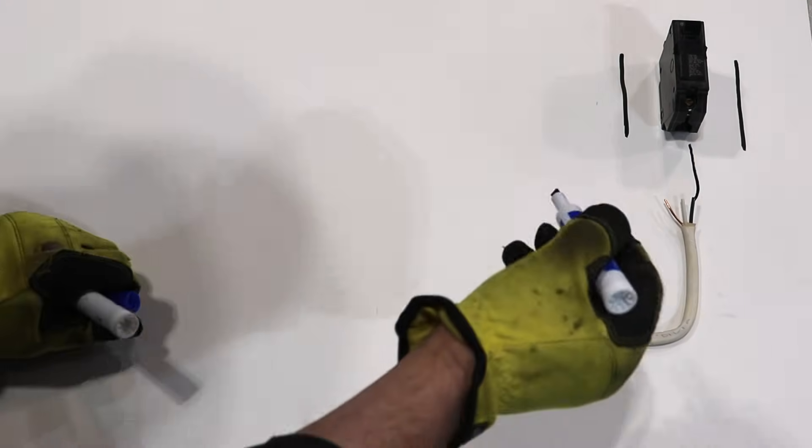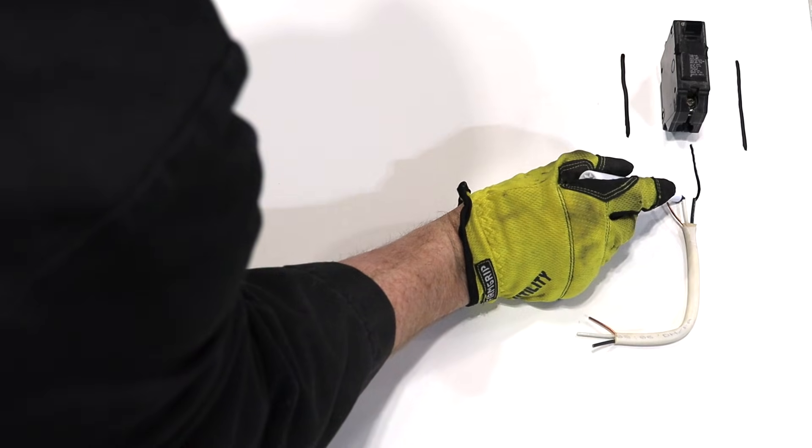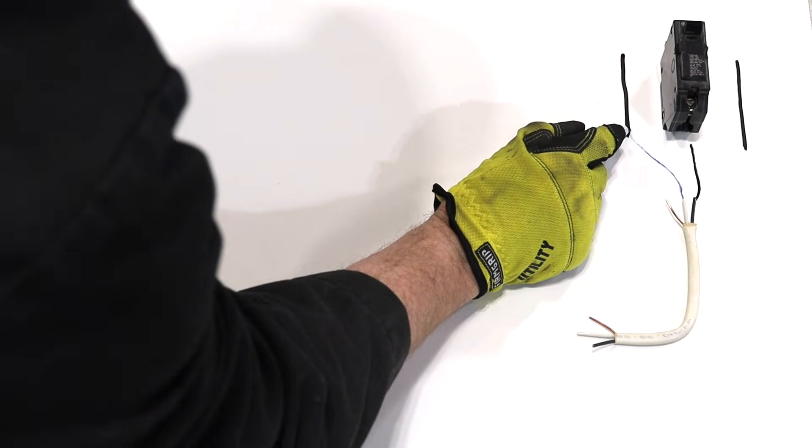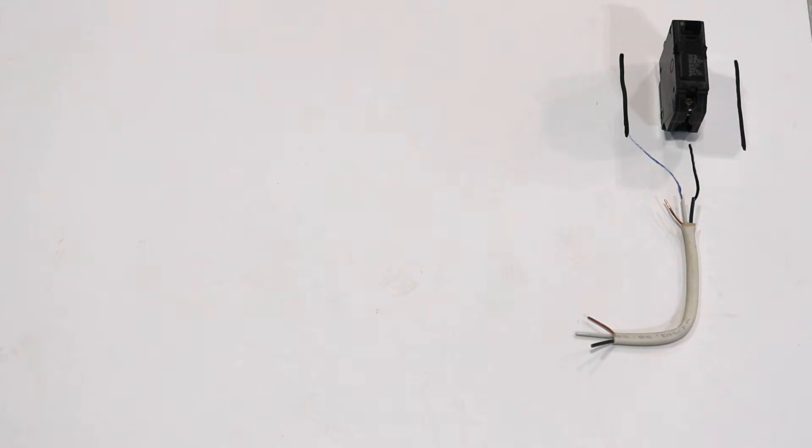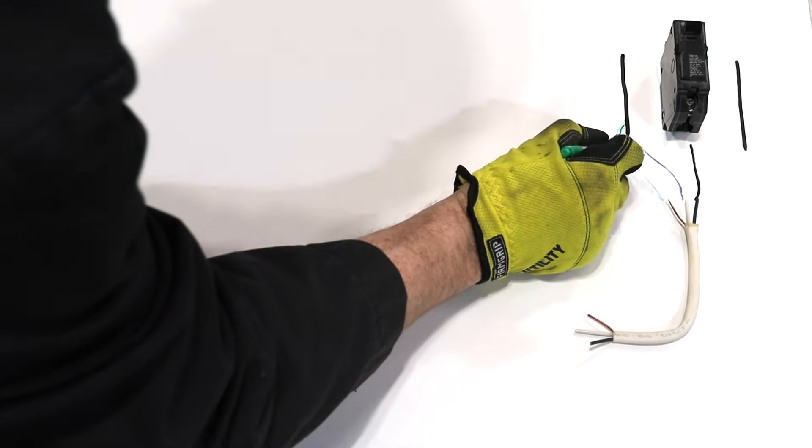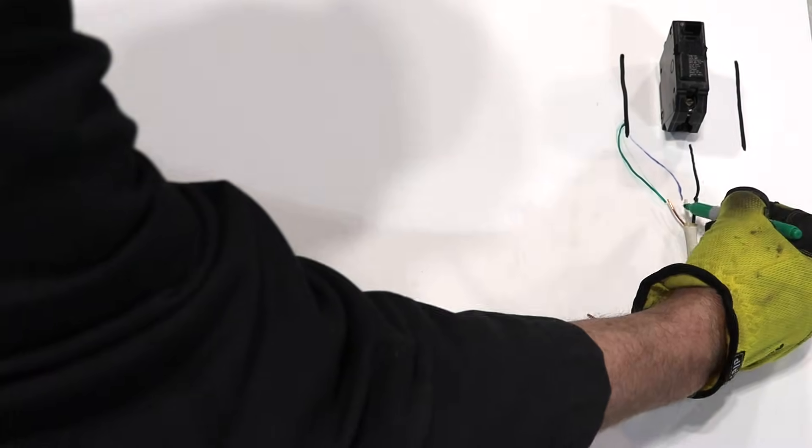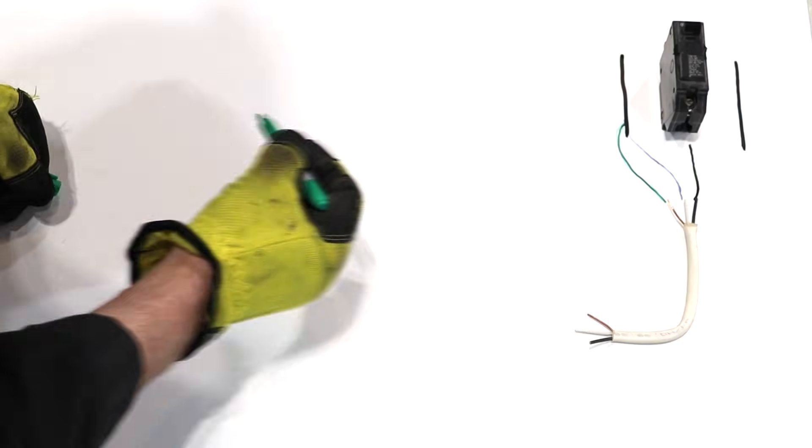I'm gonna use blue since I don't have white on white. The neutral is gonna go over to one of the bus bars and in your panel box your ground can also go on the same bus bar. So I could have put the ground or the neutral on either bus bar.